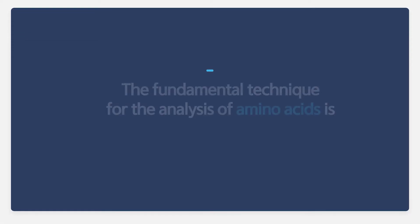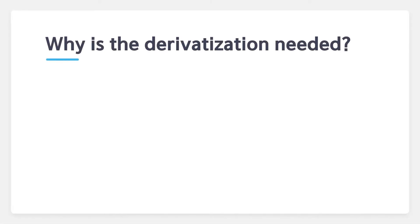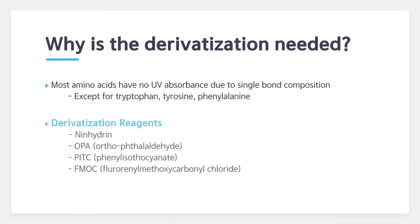The fundamental technique you need to know to analyze amino acids is derivatization. Why is derivatization needed? Most amino acids are not detectable by UV visible detector or fluorescence detector due to no UV absorbance. So, derivatization of amino acids is needed for determination. And there are several derivatization reagents used in this application.